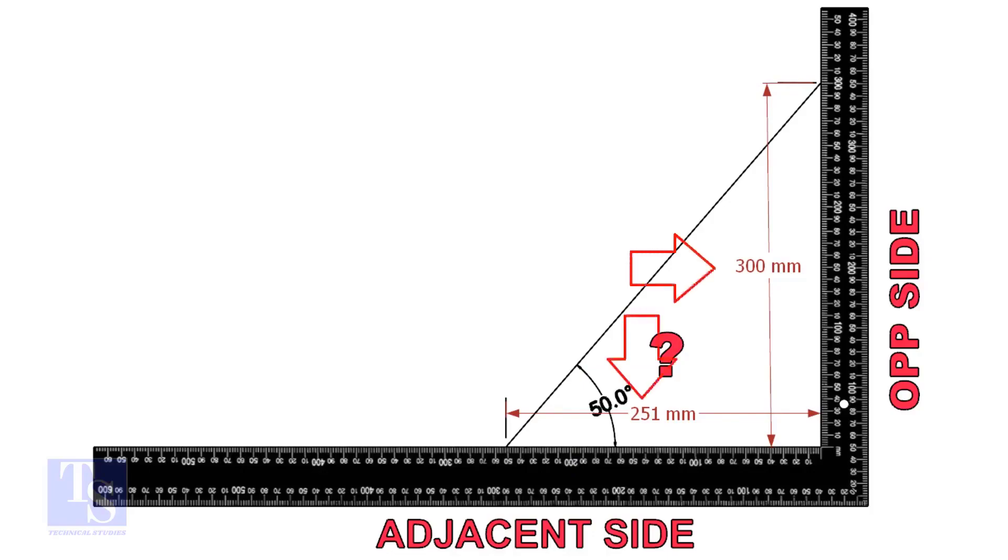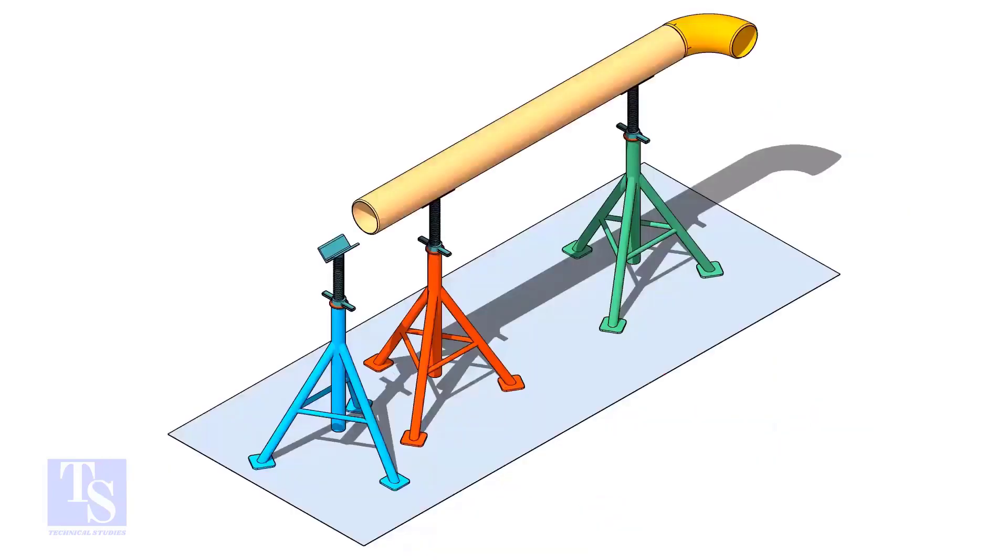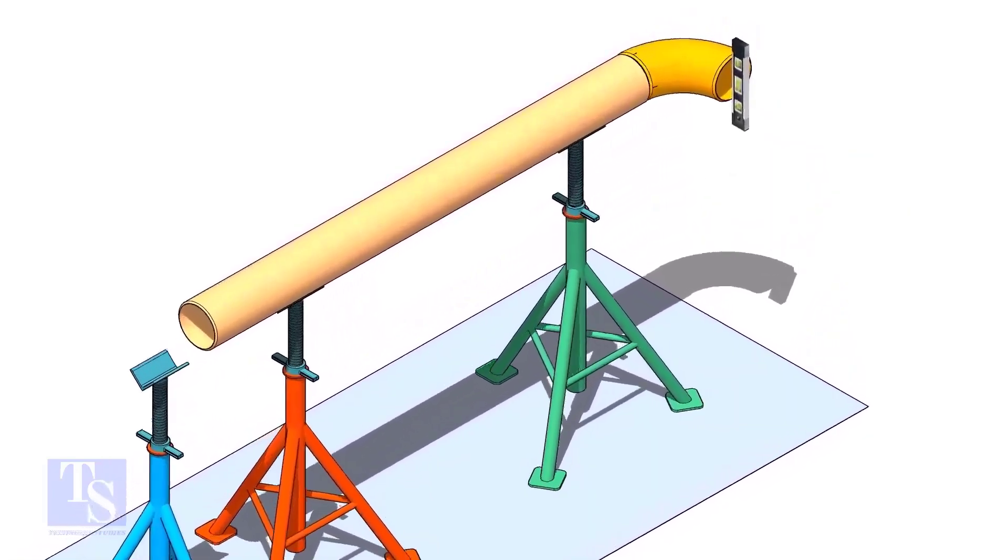Mark these dimensions on a large right angle, as shown. Level the pipe and the elbow that is already fitted on the pipe.